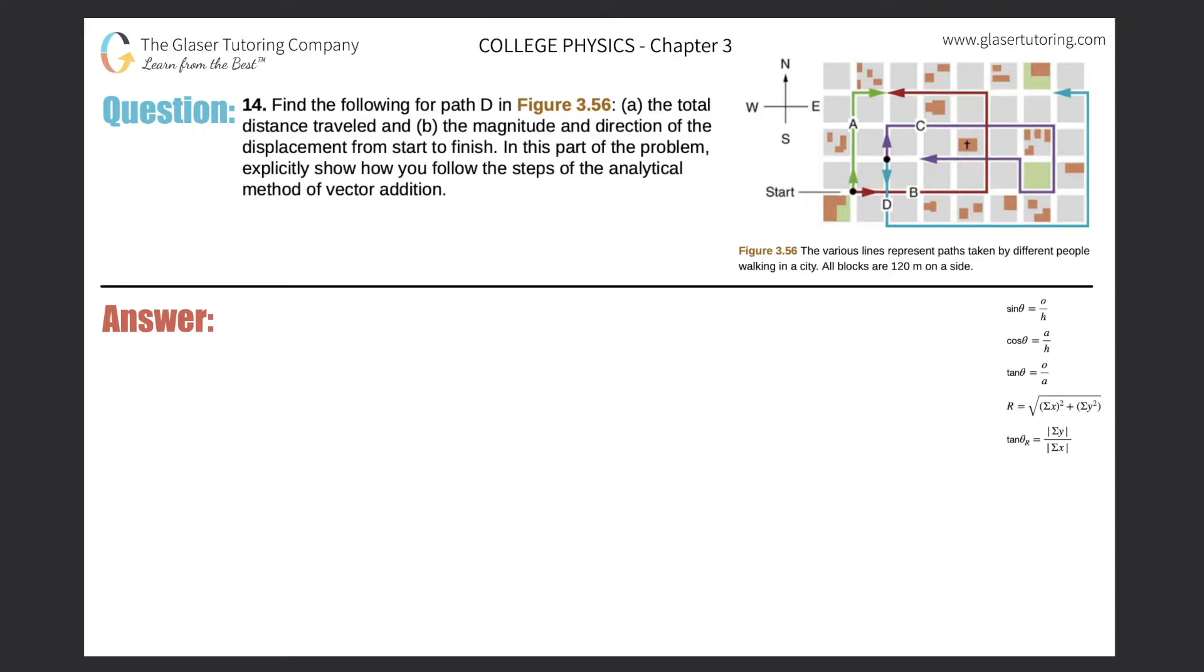Number 14. Find the following for path D in figure 3.56. Letter A, the total distance traveled, and B, the magnitude and direction of the displacement from start to finish. All right, and make sure we use the analytical method.